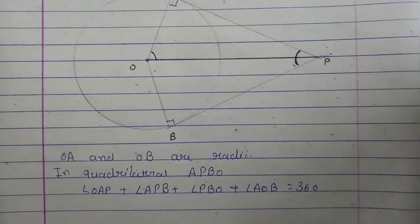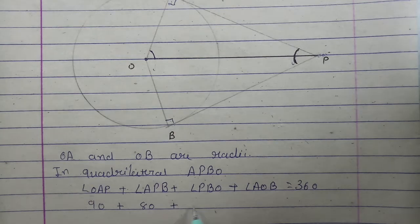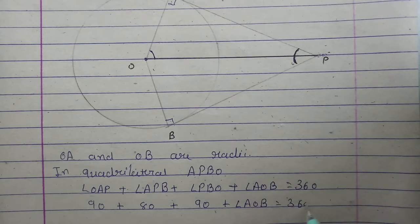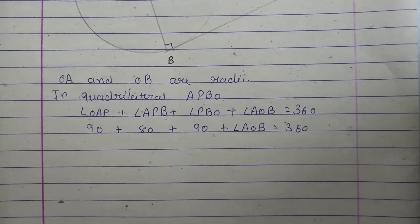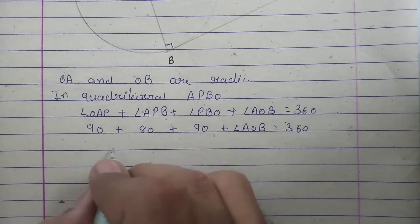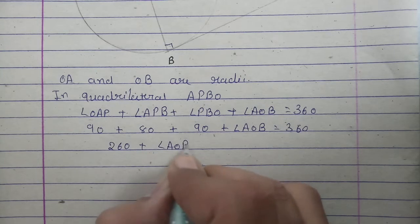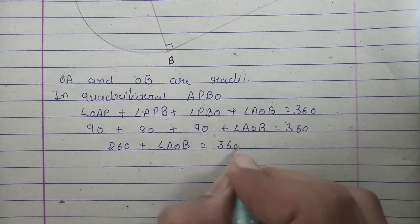Angle OAP is 90, angle APB is 80, angle PBO is again 90, and angle AOB we have to find. So 90 plus 90 is 180, 180 plus 80 is 260, plus angle AOB is equal to 360.